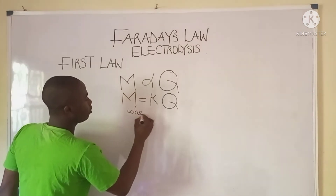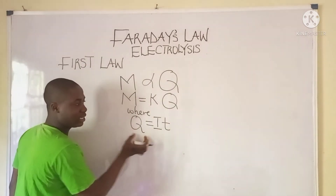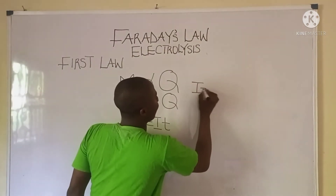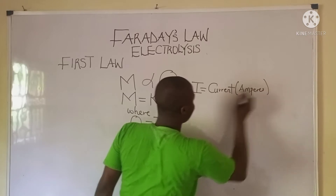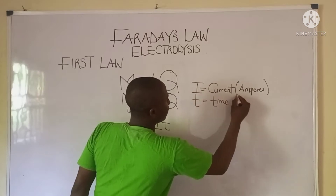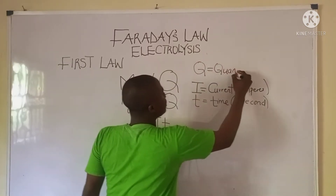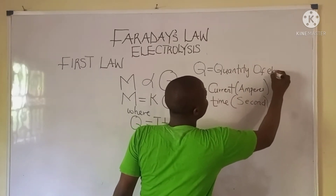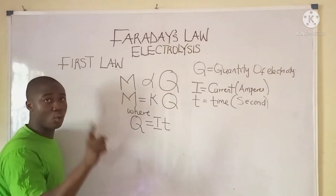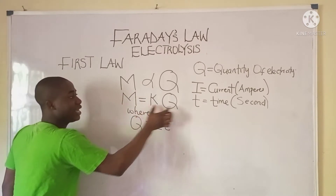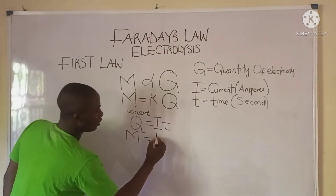Q, which is quantity of electricity, is equal to It. Here, I is current in amperes and t is time in seconds. So when we proceed, mass m equals k times I times t, giving us m = kIt.